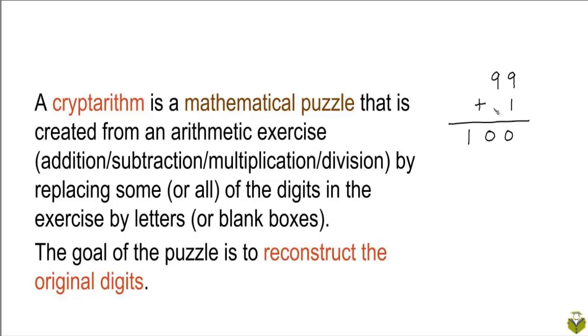For example, we can take this simple addition exercise: 99 plus 1 is 100. And we can replace the digit 9 by the letter A, the digit 1 by the letter B, and the digit 0 by the letter C.